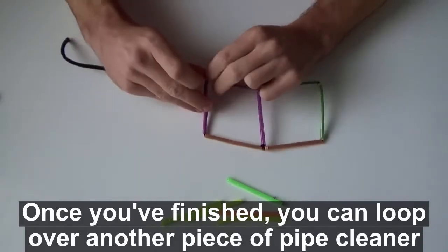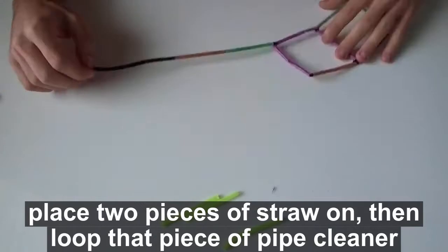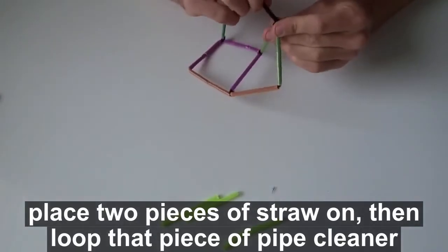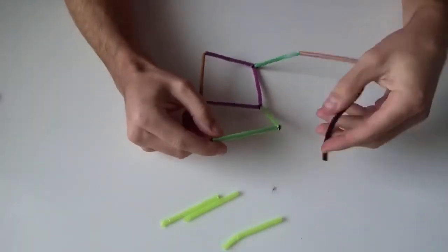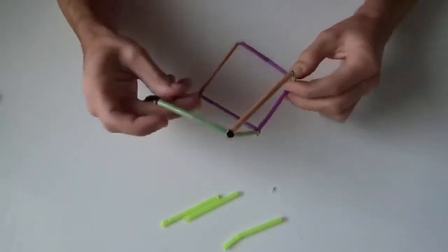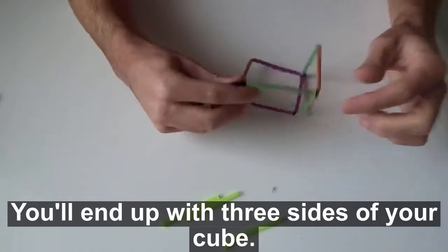Once you've finished, you can loop over another piece of pipe cleaner. Place two pieces of straw on, then loop that piece of pipe cleaner through one of the existing straws. You'll end up with three sides of your cube.